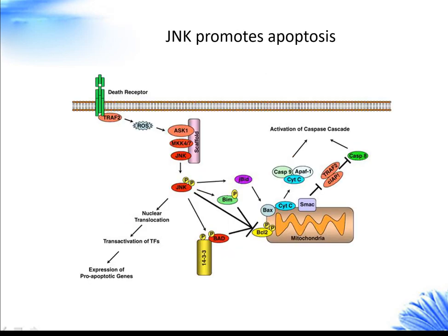JNK can promote apoptosis by two distinct mechanisms. In the first mechanism, targeted at nuclear events, activated JNK translocates to the nucleus and transactivates c-Jun and other target transcription factors.